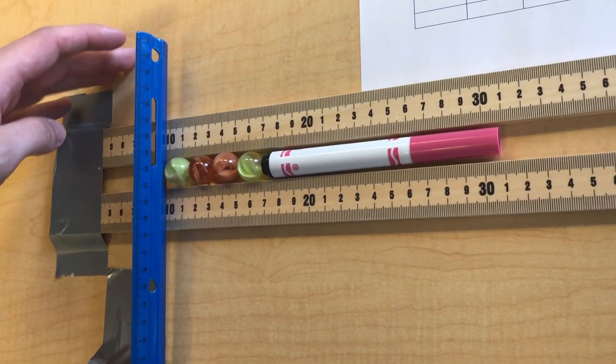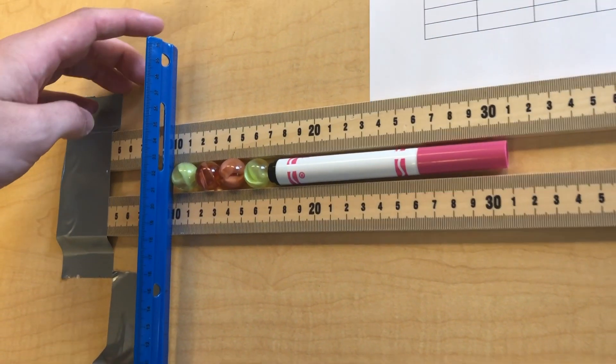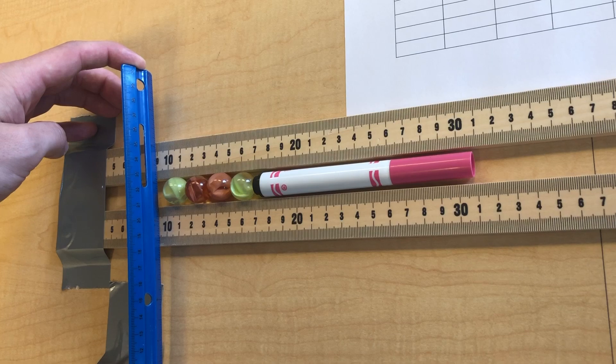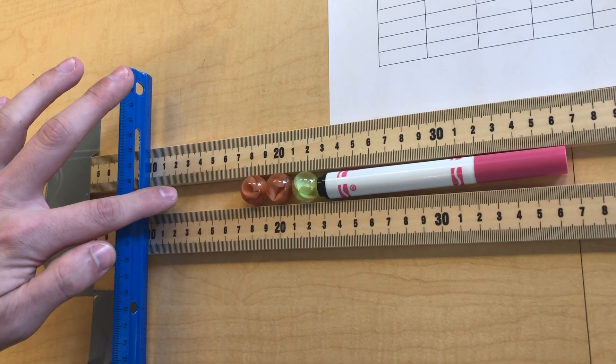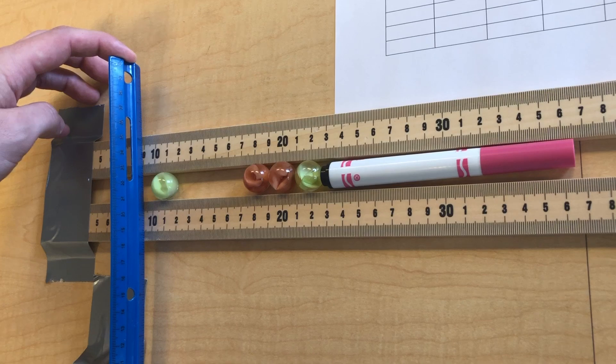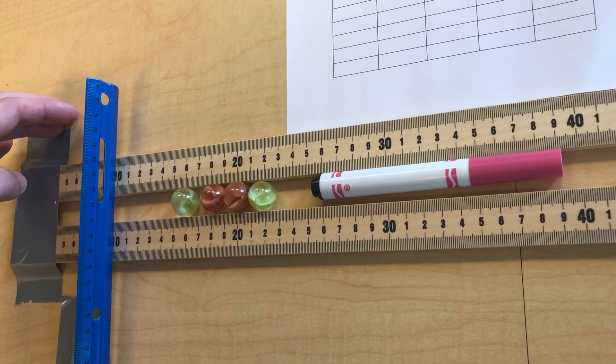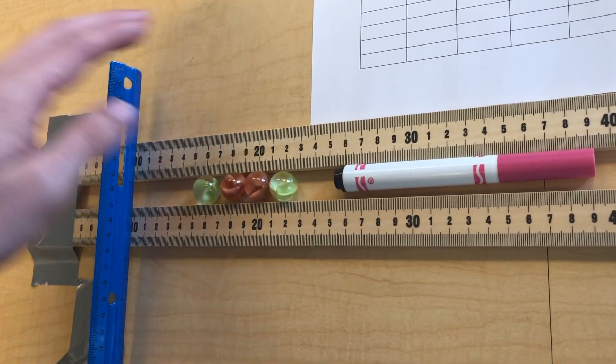This time we're going to test a vibration with a frequency of two waves per second. We're going to pull it back one centimeter and release and then set it up again. We're going to pull it back to one centimeter again and record our data for a vibration with a frequency of two waves per second.